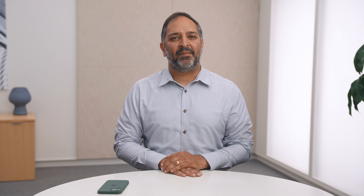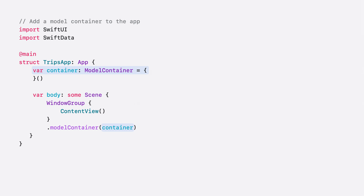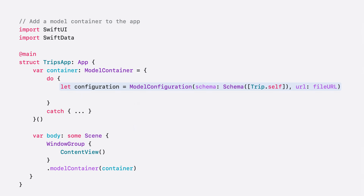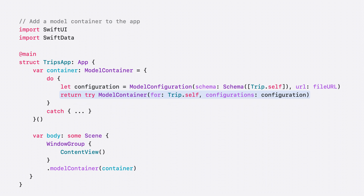Let me do this for the Trips app. Instead of using the model container modifier to construct a container, I'll create one of my own by using a property called container. In the properties closure, I will create a configuration for my model and pass the schema. This is where I'll customize the URL of the data on disk as well. Then I will pass this configuration to the model container initializer and return it.